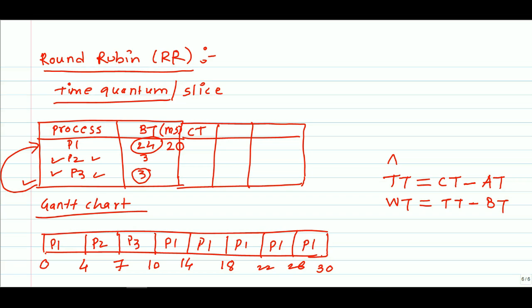Completion time of P1 process is 30 milliseconds because at this instant P1 process is completely executed. For P2 process we have 7, and P3 process we have 10 completion time. Now turnaround time is nothing but completion time minus arrival time.